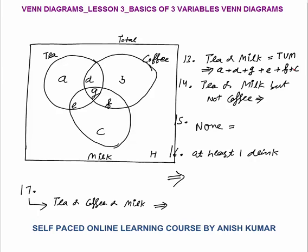Tea or milk but not coffee — first we calculate tea or milk, which is A, D, G, E, F and C. But we will exclude the part of coffee. So D, G and F, which are in the coffee circle, will be excluded. It will be only A plus E plus C.